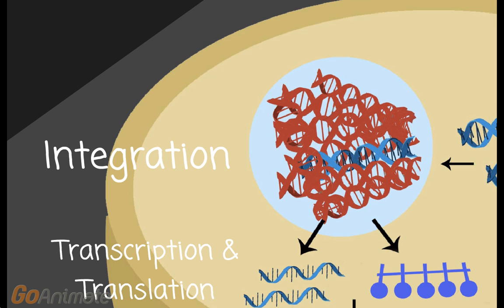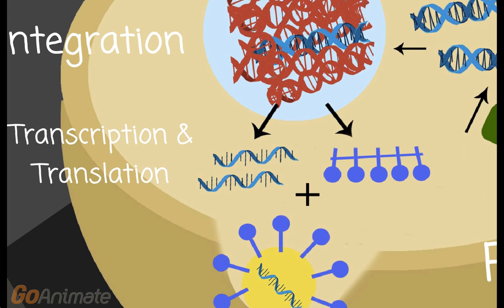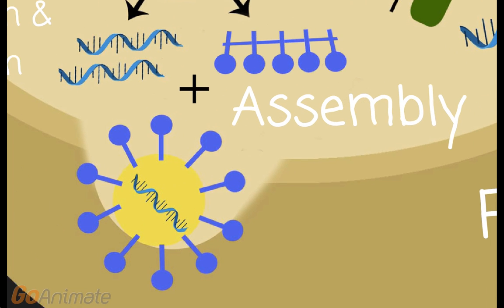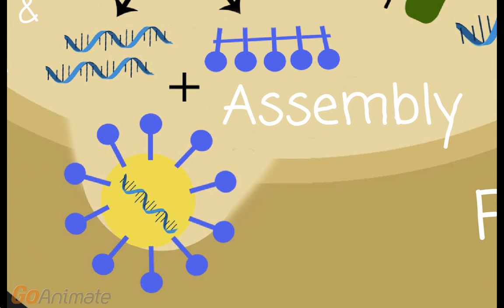Next, we have transcription and translation. During this step, the HIV virus uses the host cell's machinery to make HIV viral proteins and structures. This is where the HIV virus replicates its parts before assembling into an army to be released from the host cell — similar to the criminal making his counterfeit money. The sixth step, assembly, occurs when HIV RNA and proteins are packaged into the viral capsid, effectively creating more HIV viruses.